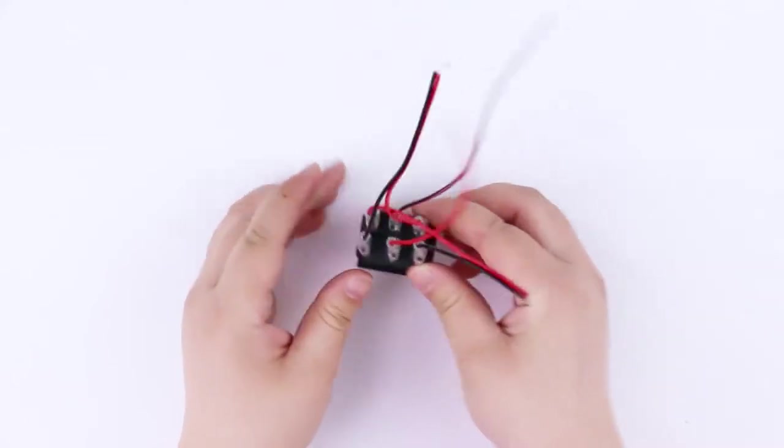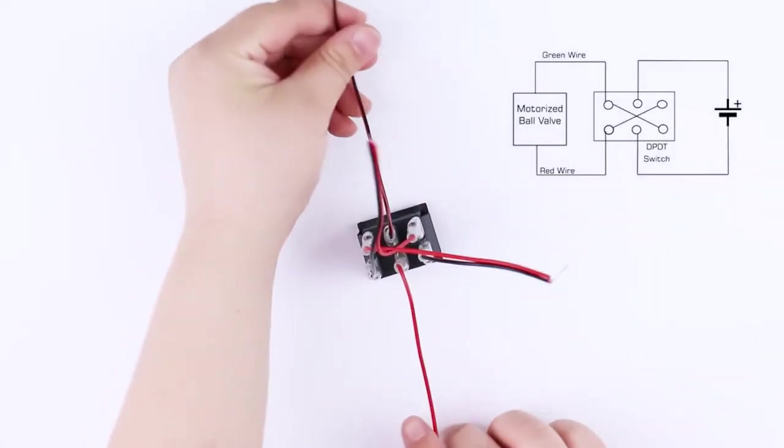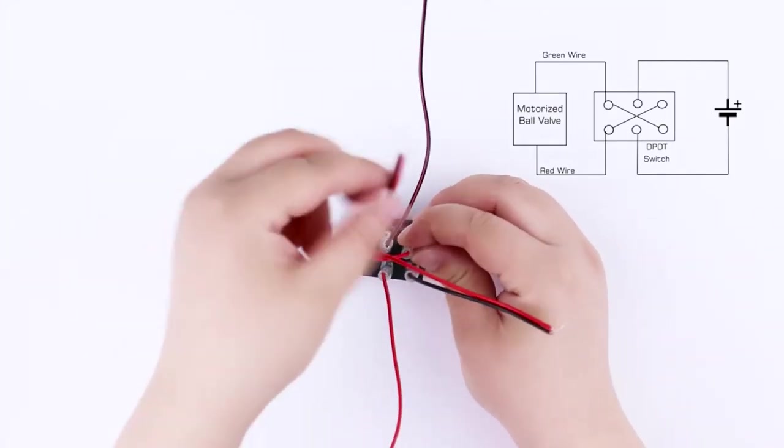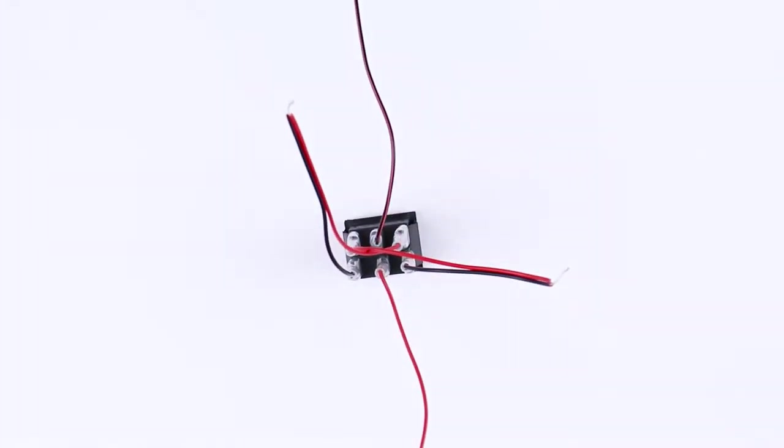Wires in the middle of the switch should be connected to the power supply, and the wires at the end of the switch should be connected to the blue and yellow wires of the valve.